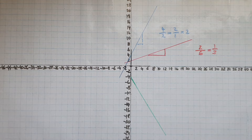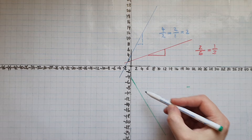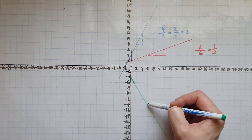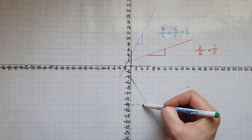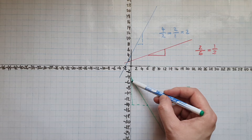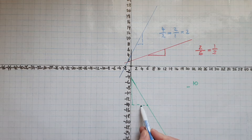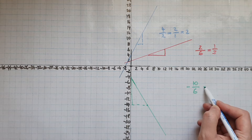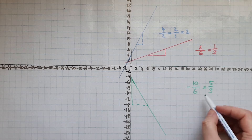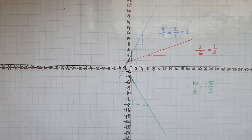For the green line, this is going downwards so we know the gradient will be negative. Let's form a triangle. It's going down by ten and across by six. Simplifying this we get five thirds — negative five thirds. Do not forget the sign in front.